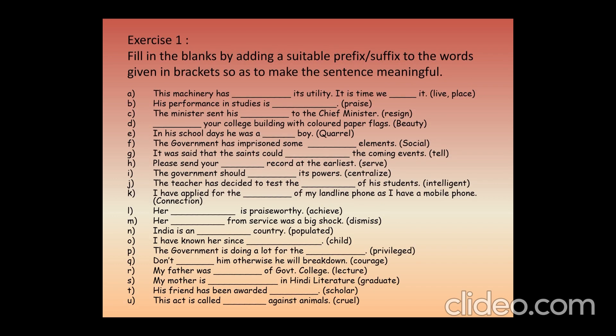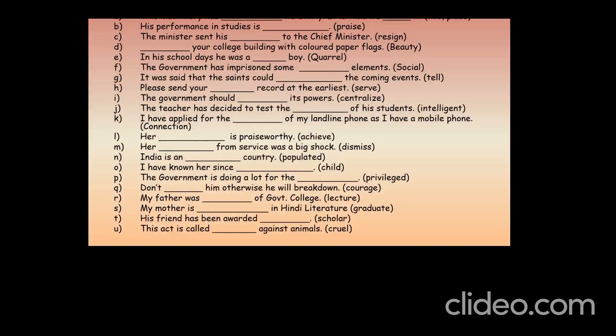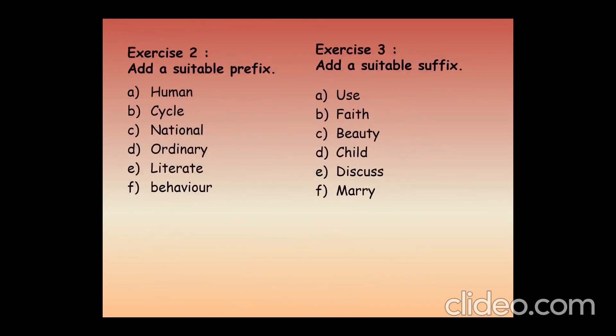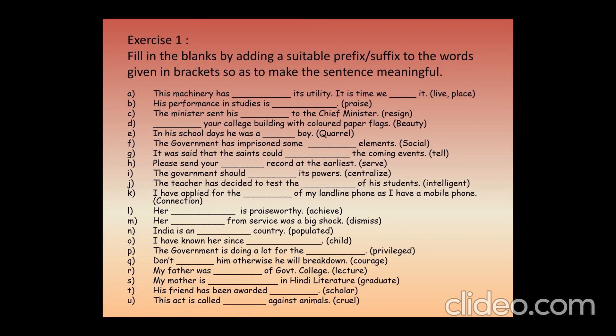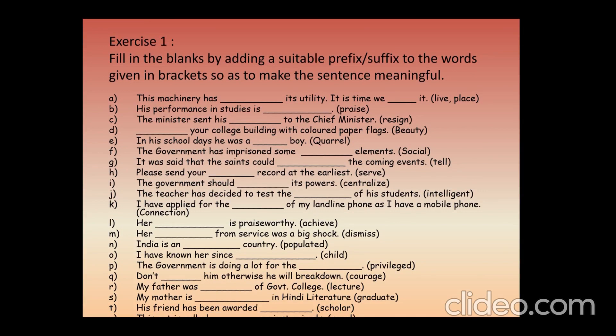Now you have a fairly good idea of how prefix and suffix are added. When tested in exams, this is the type of question you get: fill in the blanks by adding a suitable prefix or suffix to the words given in brackets to make the sentence meaningful. For example, 'The machinery has [dash] its utility — it is time we [dash] it.' The answers are: 'The machinery has outlived its utility. It is time we replace it.' And 'His performance in studies is praiseworthy.'